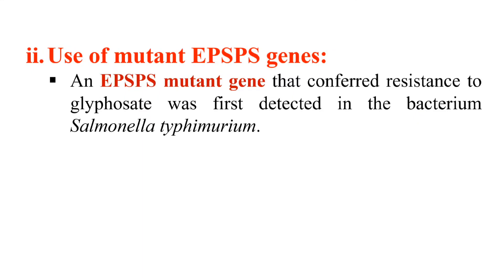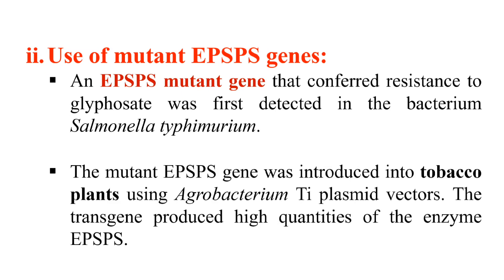The second strategy is the use of a mutant target protein. Here we use a gene that produces the target enzyme in a mutated but normally functioning form. We use the gene of a mutated EPSPS — the enzyme targeted by glyphosphate — which was detected in the bacterium Salmonella typhimurium. This gene was isolated and transferred into plants. The mutant EPSPS gene was introduced into tobacco plants using the Agrobacterium Ti plasmid vector. The transgene produces a high quantity of EPSPS in its mutated form, which glyphosphate cannot inhibit, while the enzyme continues to function normally — making the plant resistant to glyphosphate.